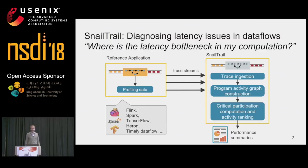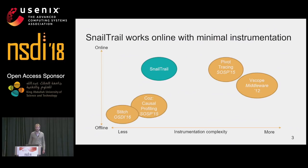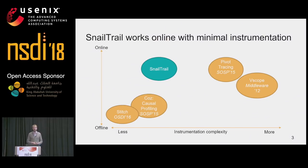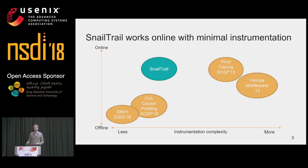Let me start by positioning SnailTrail relative to its related work. In this diagram, I show some related work, where the horizontal axis represents the instrumentation complexity and the vertical axis shows whether it works in an online or offline scenario. Pivot Tracing, presented at SOSP 2015, works in an online scenario but requires quite a bit of instrumentation. It traces requests through a distributed system and the instrumentation has to carry the data around. CAUSE, doing causal profiling, also presented at SOSP 2015, can work with unmodified programs and determines performance bottlenecks by repeatedly running the application and slowing down parts of it.